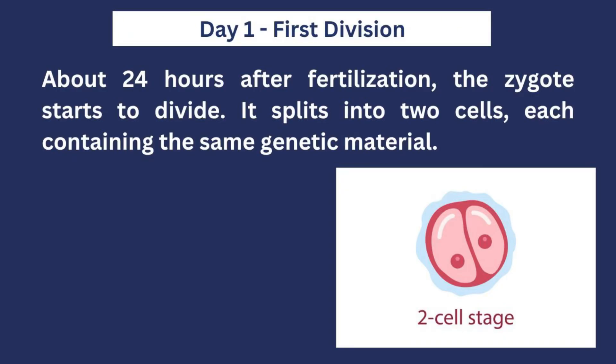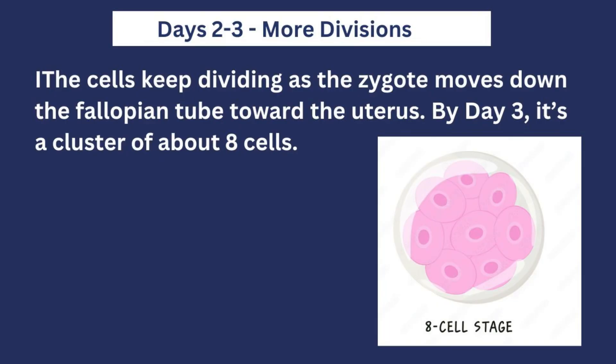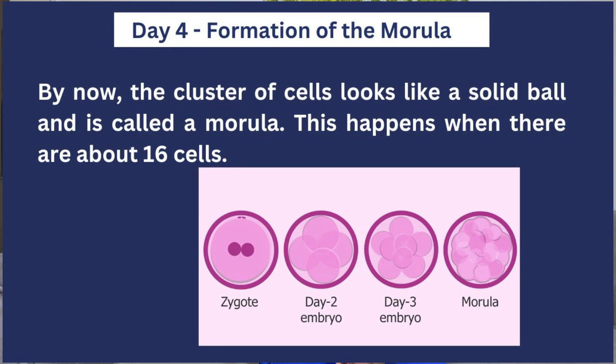The zygote is split into two identical cells, meaning both cells contain the same genetic material — everything about them is the same. By the end of day three, the zygote that divided into two cells will have divided into eight cells, all clustered together in a ball. And by the end of day four, these eight cells will have divided into 16 cells, called a morula.